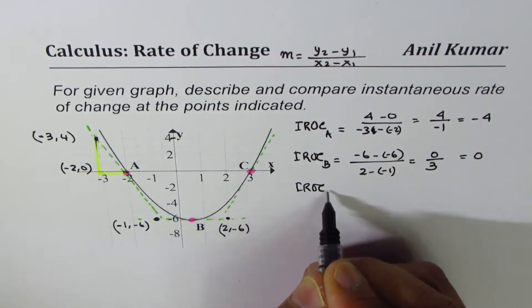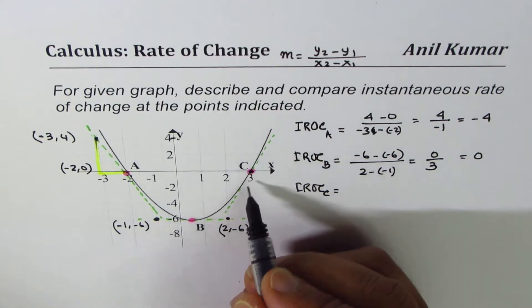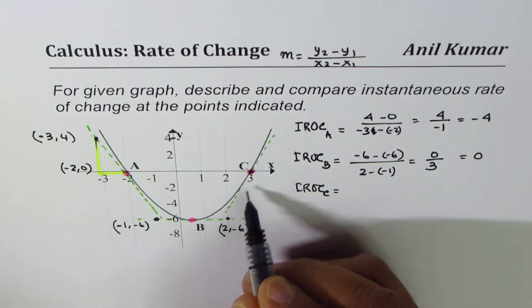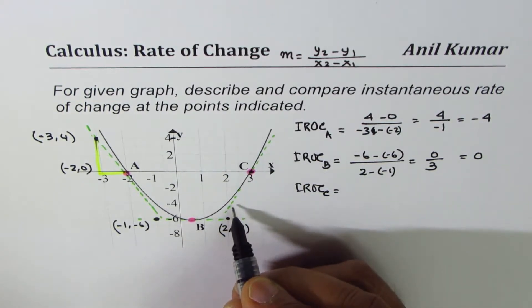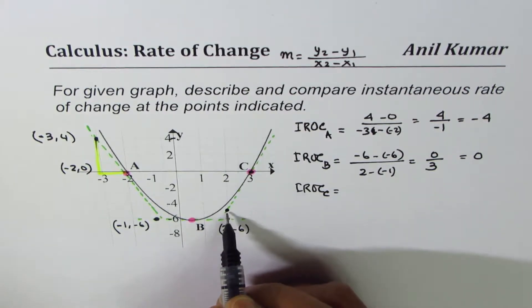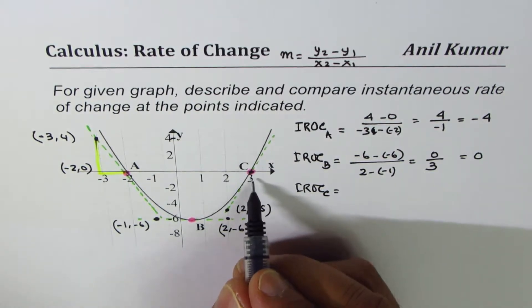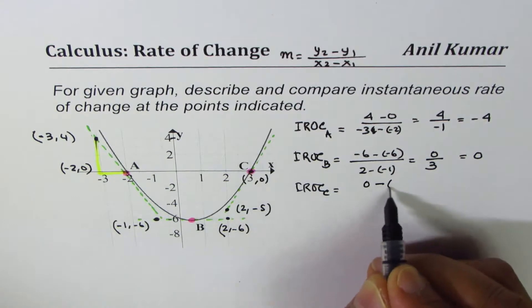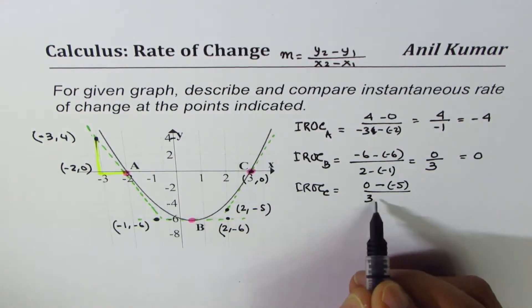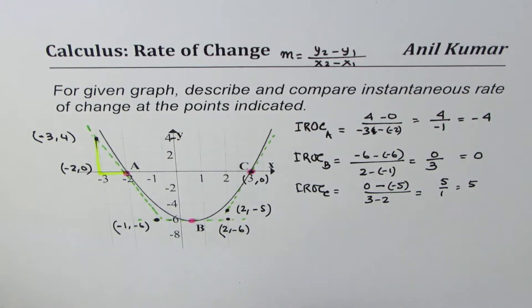For point C, we consider two points on the tangent. One point is (2, -5) and the other is (3, 0). The instantaneous rate of change is (0 minus -5) divided by (3 minus 2), which is 5 over 1, giving us a result of 5. So the slope at C is positive five.